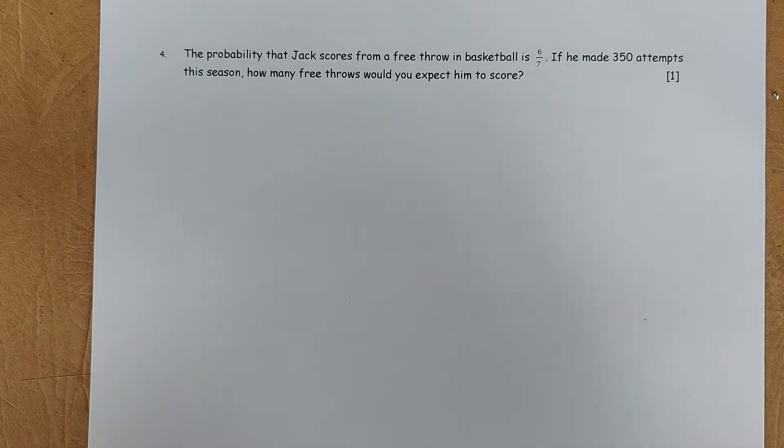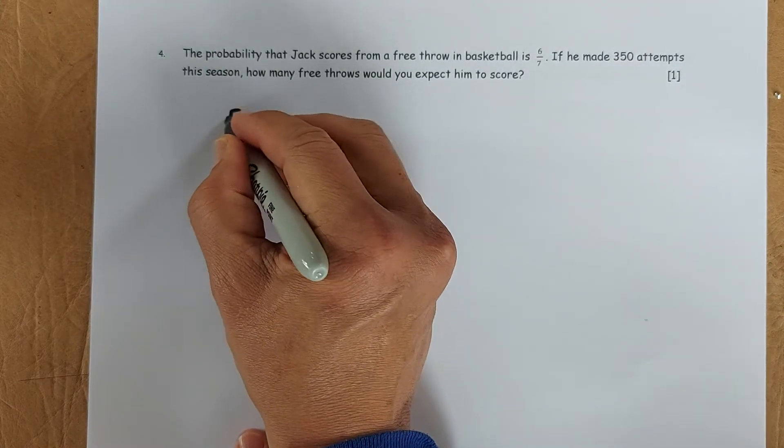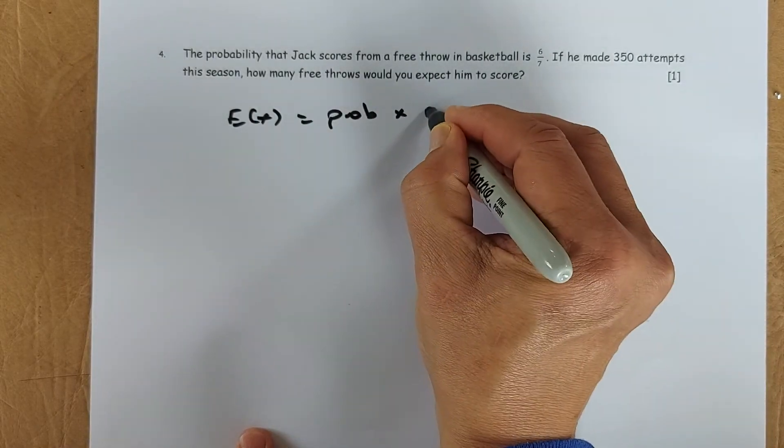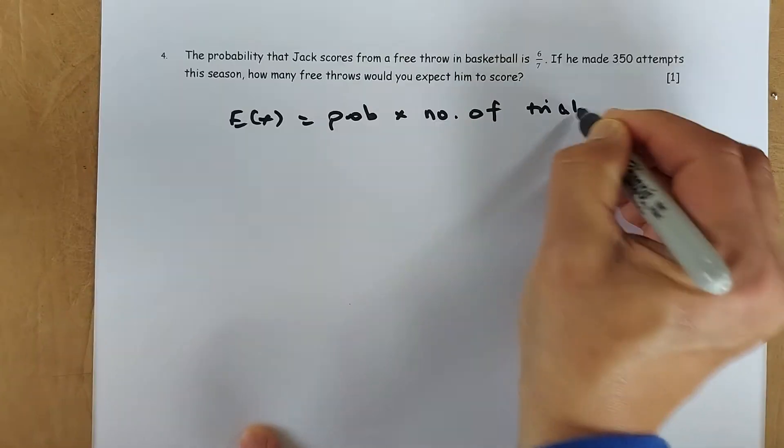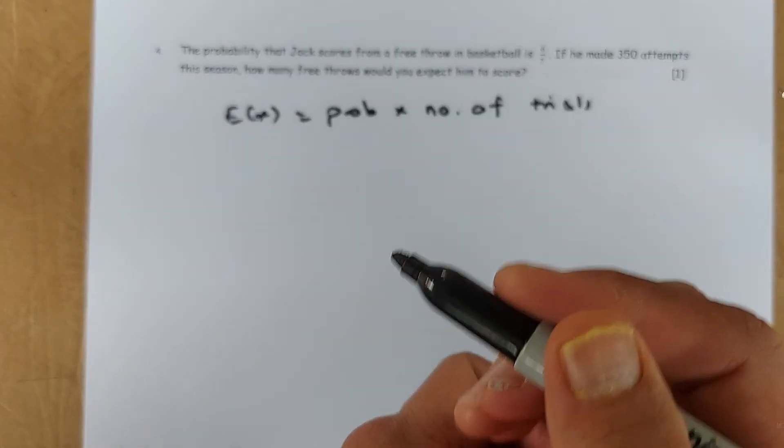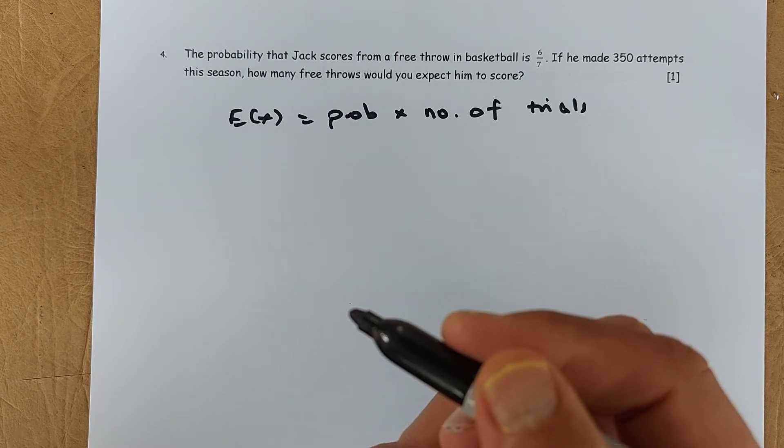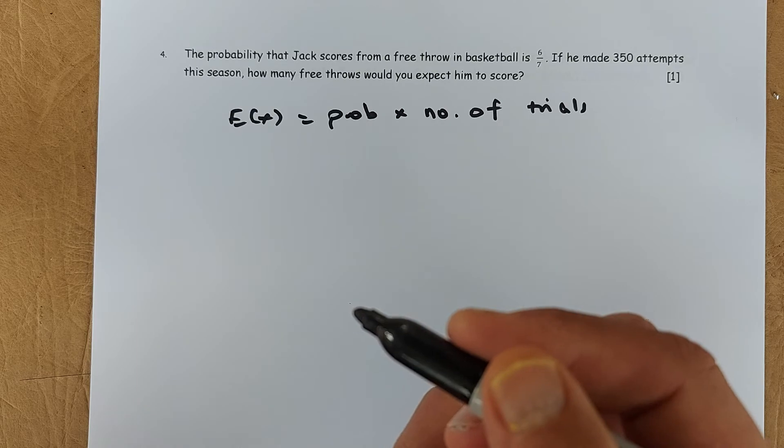Now we are looking at expected value. If you do not know, expected value is probability multiplied by number of trials. In this case, we shall read. The probability that Jack scored from a free throw in basketball is 6/7. So that is the probability. If he made 350 attempts this season, how many free throws we expect to score.